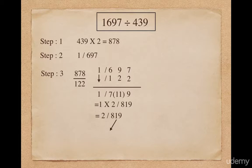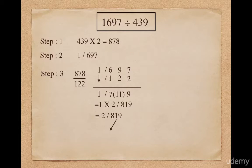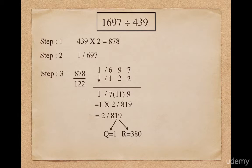But the sum doesn't end here. Please note that 819 is greater than our original divisor 439. So I will have to divide 819 by 439 and it gives me quotient as 1 and remainder as 380. So the final answer will be quotient is 3 and remainder is 380.